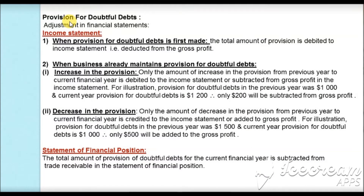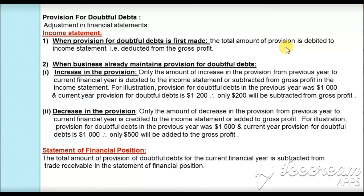Before proceeding further, let's understand how the provision for doubtful debts affects the financial statements — both the income statement and the statement of financial position. In the income statement, when making the provision for the first time, the total amount is debited to the income statement, deducted from gross profit. When the provision already exists, only the increase is subtracted from gross profit — for example, if last year was $1,000 and this year is $1,200, only the $200 increase is debited.